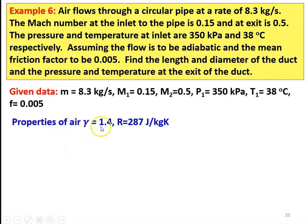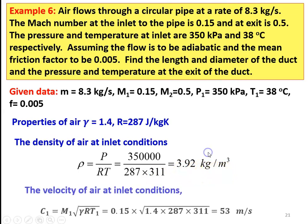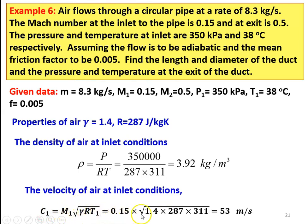The properties of air: gamma equal to 1.4 and R equal to 287 joules per kilogram Kelvin. The density of air at inlet condition: rho equal to P by RT, 350 into 1000 divided by 287 into 311, equal to 3.90 kilograms per cubic meter. The velocity of air at inlet condition: C1 equal to M1 into square root of gamma R T1, which is 0.15 into square root of 1.4 into 287 into 311, equal to 53 meters per second.